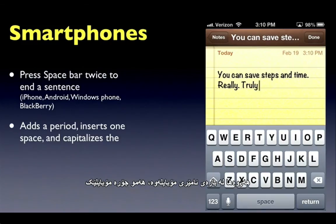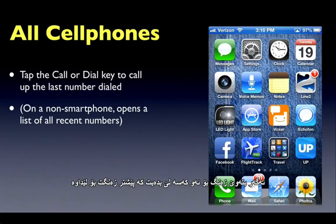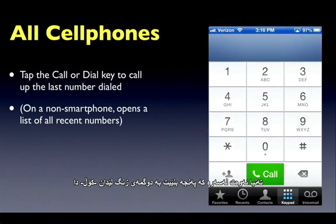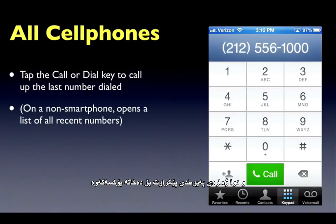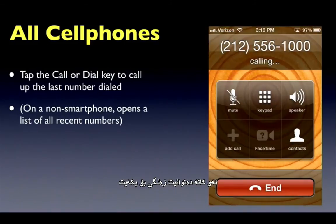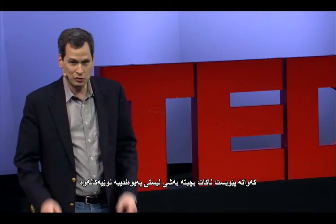Also, when it comes to cell phones, on all phones, if you want to redial somebody that you've dialed before, all you have to do is hit the call button and it puts the last phone number into the box for you. At that point you can hit call again to actually dial it, so you don't need to go into the recent calls list.